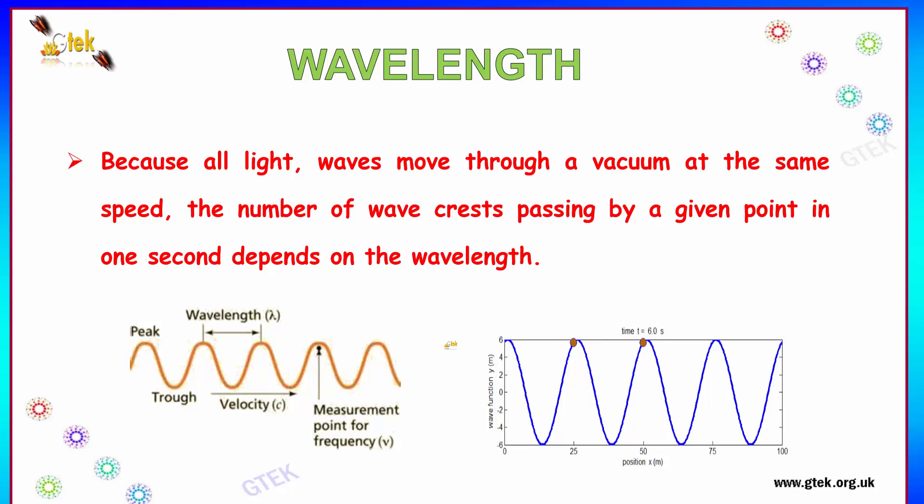Because all light waves move through a vacuum at the same speed, the number of wave crests passing by a given point in one second depends on the wavelength.